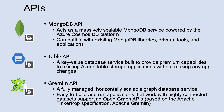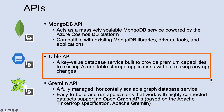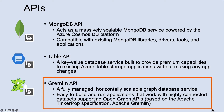The MongoDB API in Azure Cosmos DB acts as a massively scalable MongoDB service, compatible with existing MongoDB libraries, drivers, tools, and applications. The Table API in Azure Cosmos DB is a key-value database service built to provide premium capabilities such as automatic indexing, guaranteed low latency, and global distribution. The Gremlin API in Azure Cosmos DB is a fully managed, horizontally scalable graph database service that makes it easy to build and run applications that work with highly connected datasets, supporting open graph APIs.